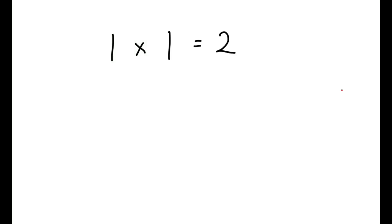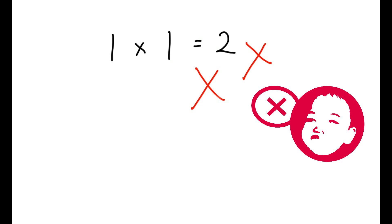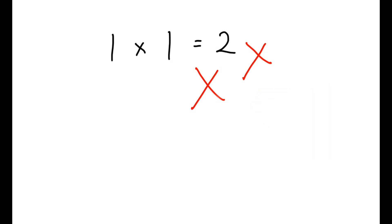What is the answer of 1 times 1? Is it 2? No. 1 plus 1 equals 2, but 1 times 1 equals 1. But why?